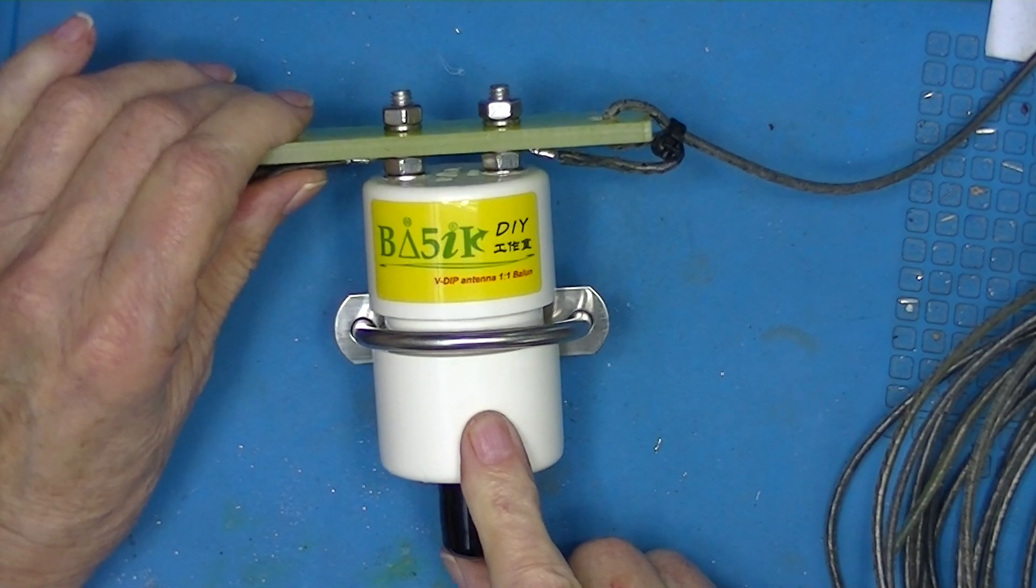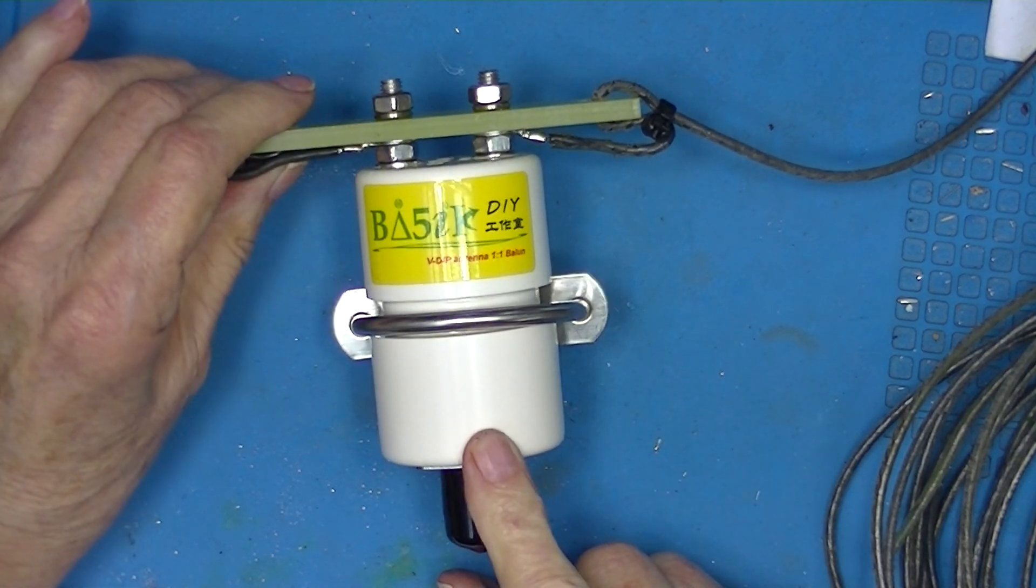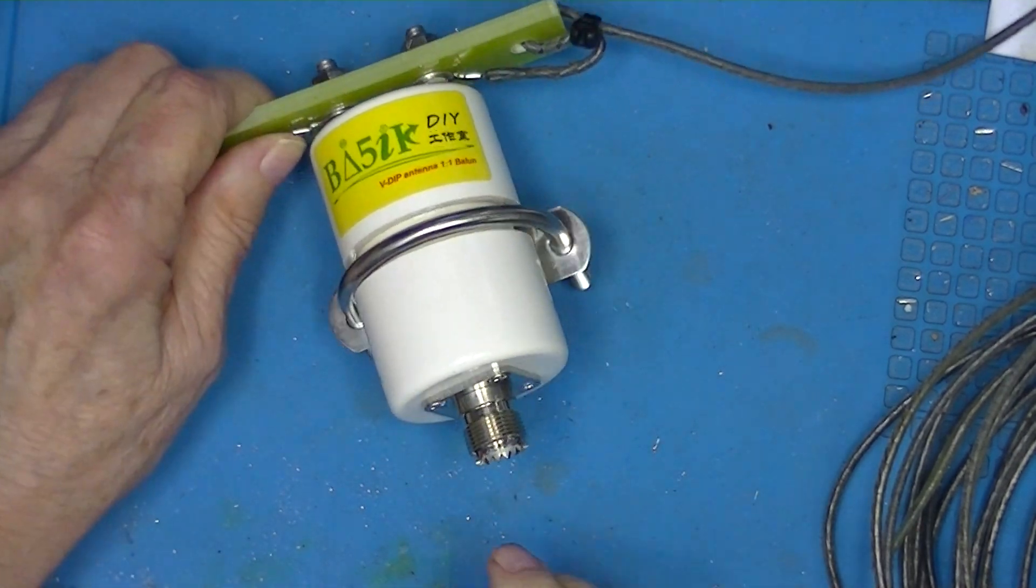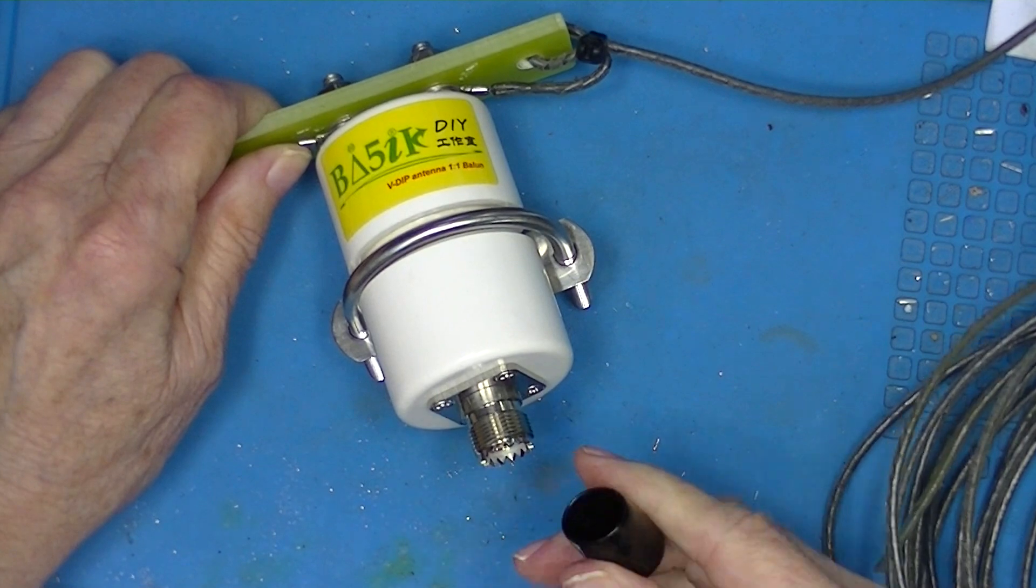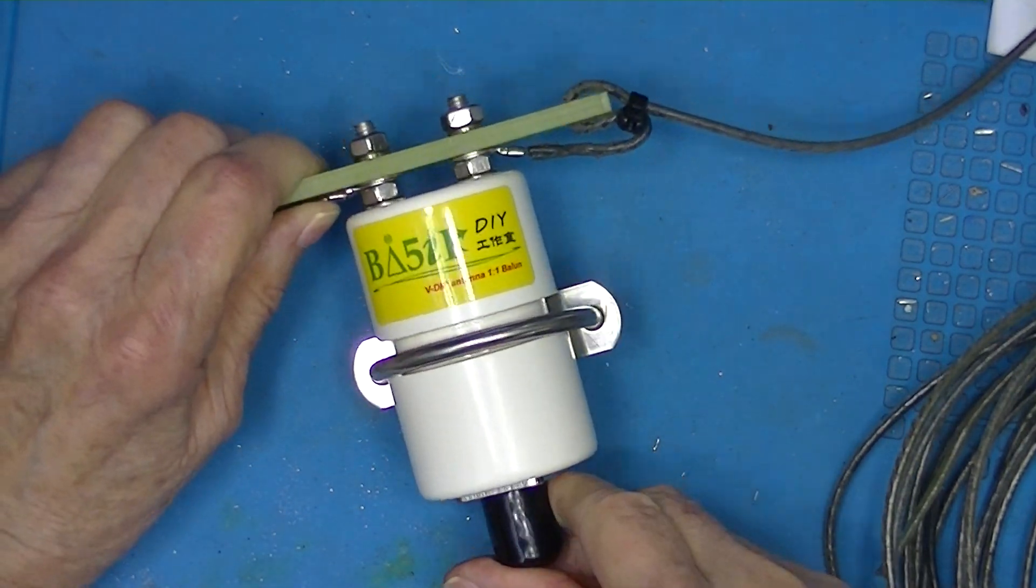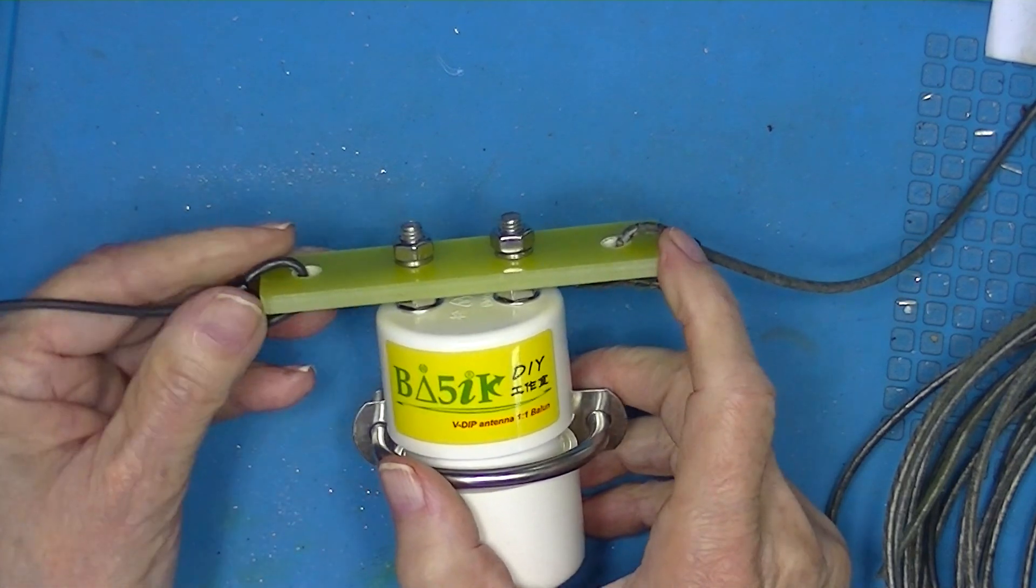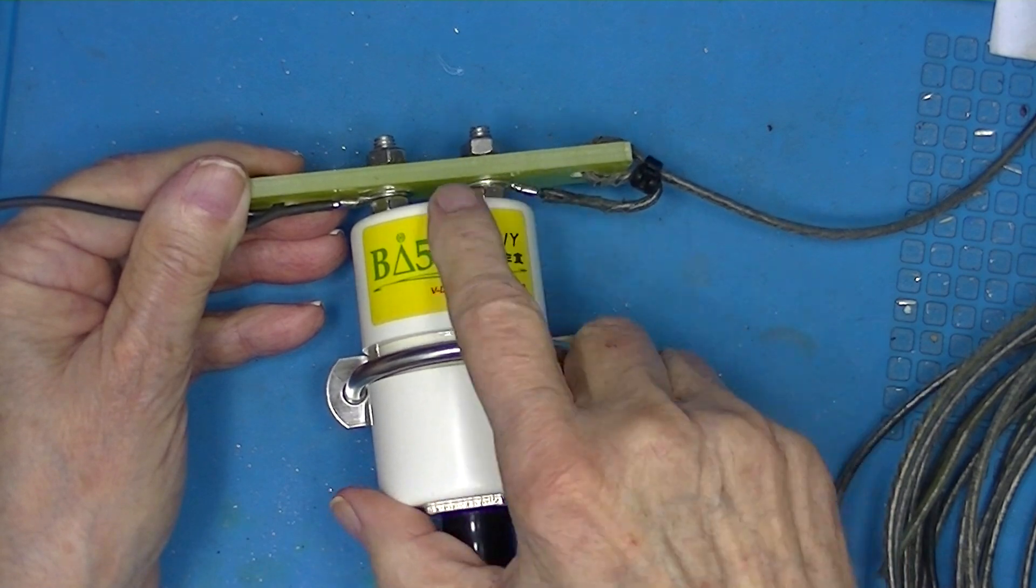This is a Chinese balun or anan depending on what you call it. It has a coaxial output here for a coaxial cable. Unbalanced by definition. Here at the top I've got two pieces of wire attached to it. Soldered ring terminals.